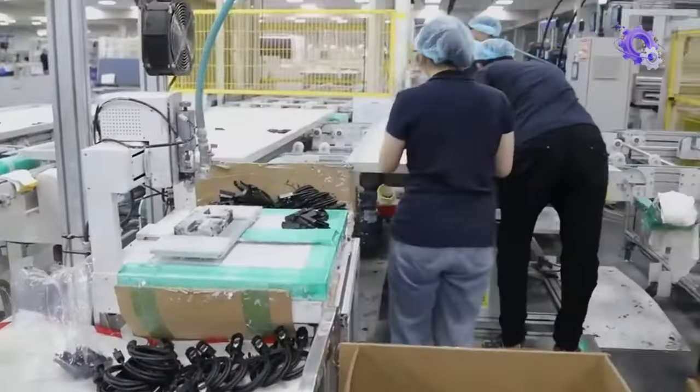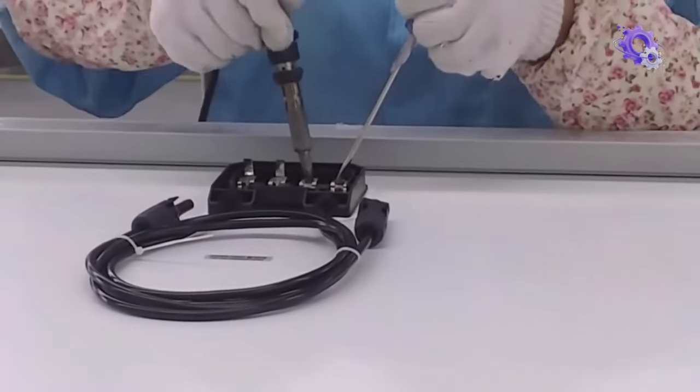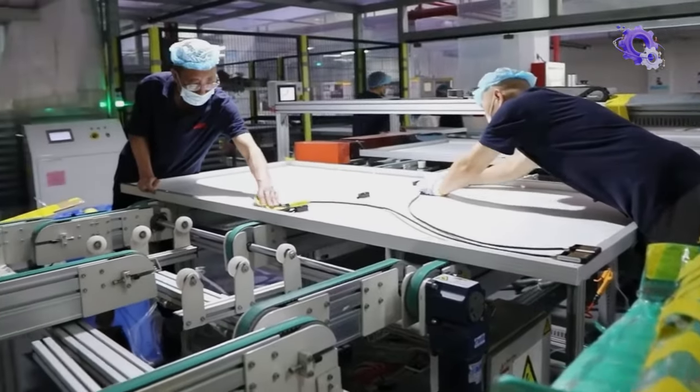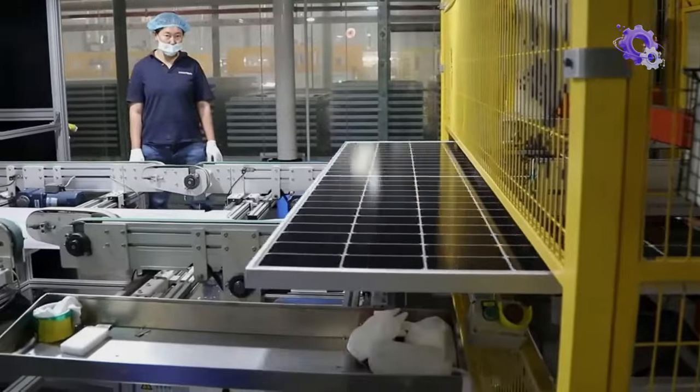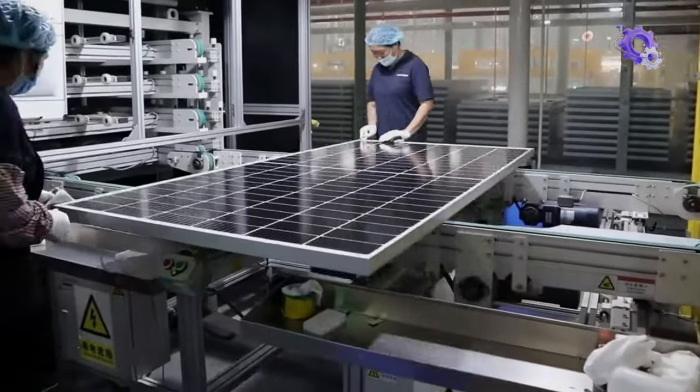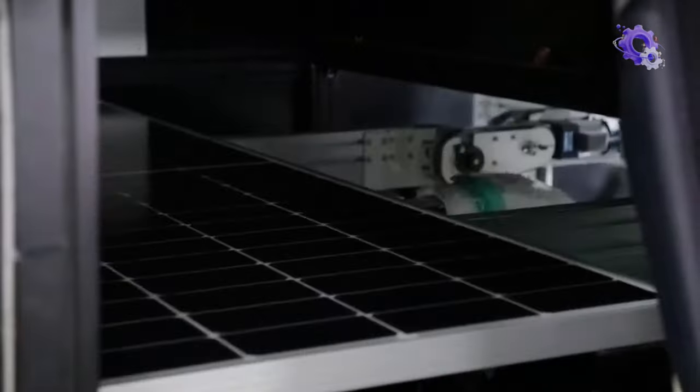A junction box containing diodes and connectors is attached to facilitate electrical connections and output. I know that was an entire college diploma. Relax. Here is the fun part now.